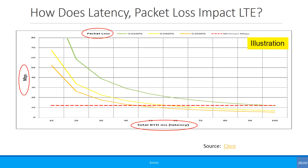This graph shows an example of how latency and packet loss impact LTE. The y-axis is throughput and the x-axis is latency, with different lines representing different packet loss levels. As you would expect, more packet loss leads to lower throughput, and higher latency also reduces throughput.